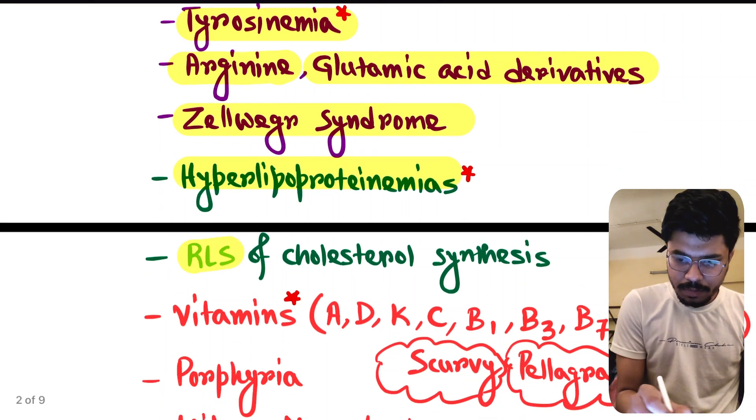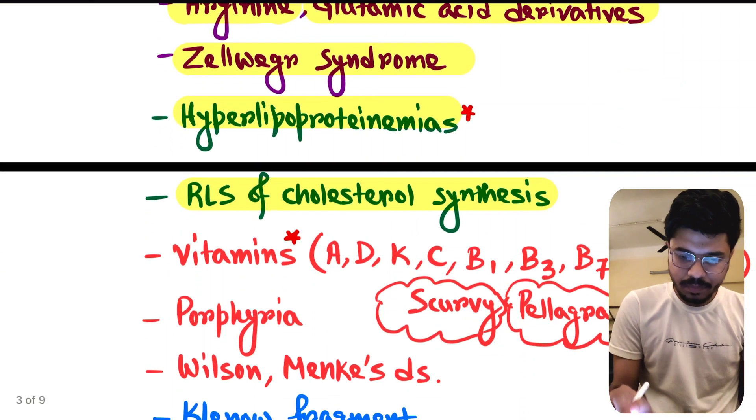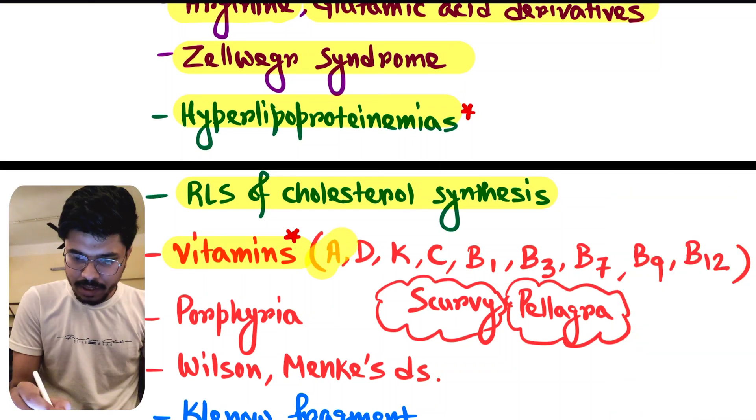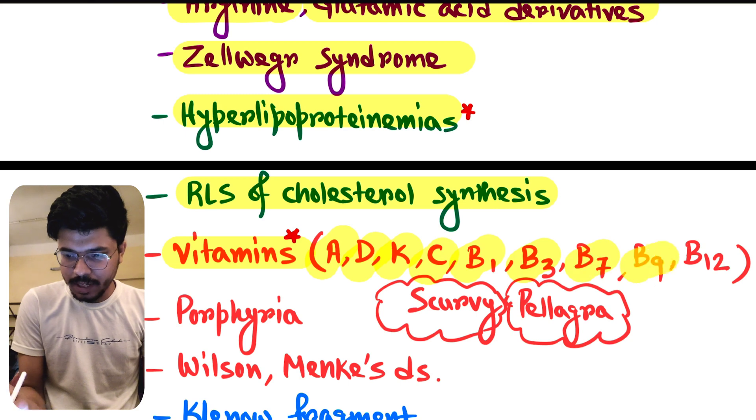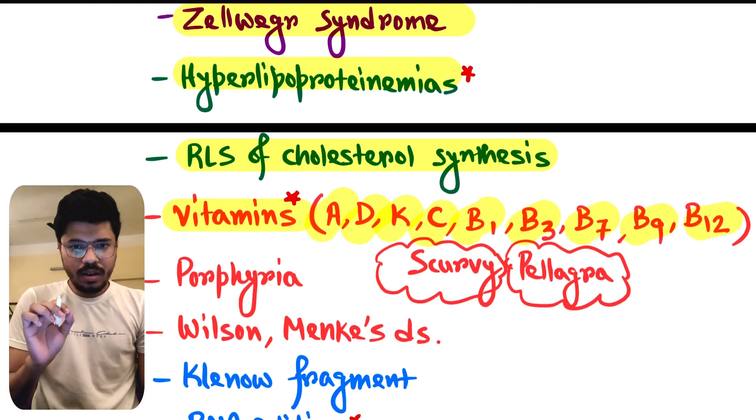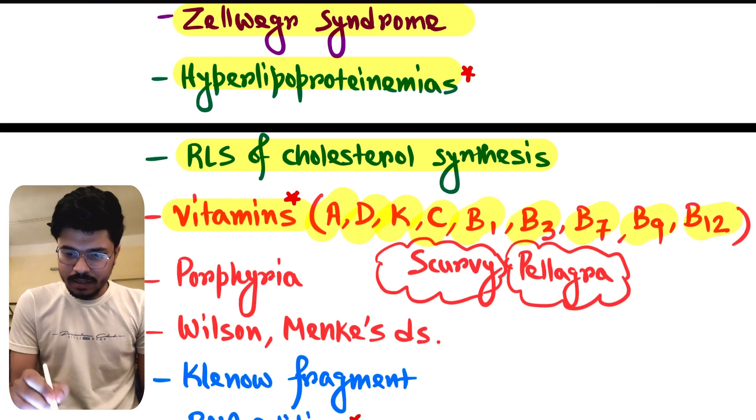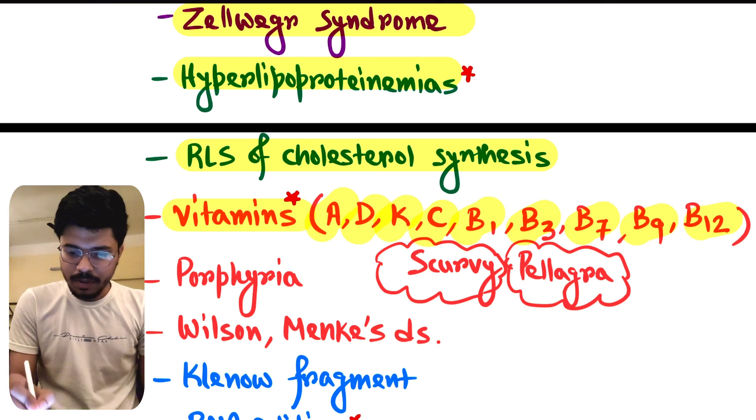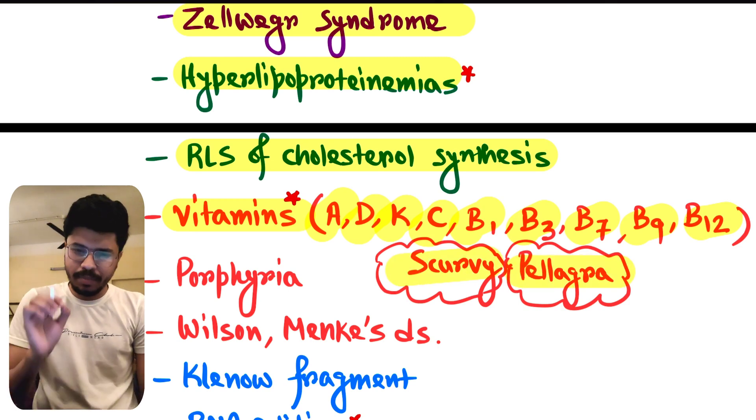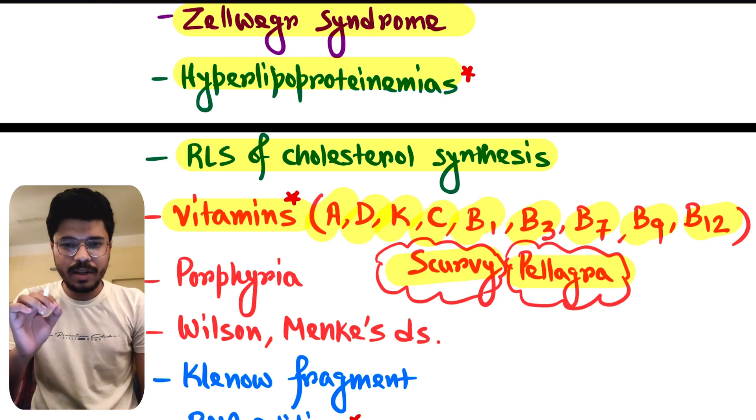Rate limiting step of cholesterol synthesis. Vitamins - vitamin A, vitamin D, vitamin K, vitamin C, vitamin B1, B3, B7, B9, B12. All the vitamins are important but these are extremely important. Vitamin C scurvy, vitamin B3 niacin pellagra, these are very important. In every year there are minimum two or three questions from pellagra.